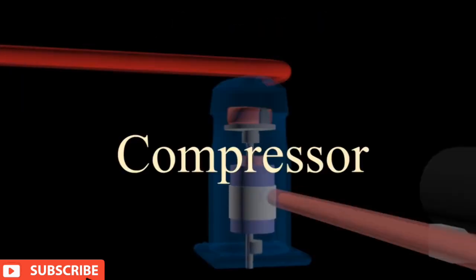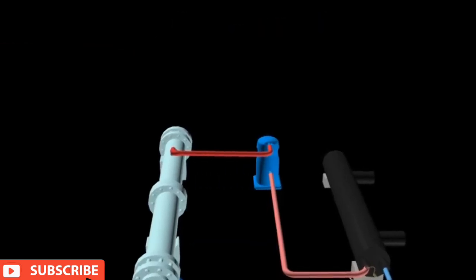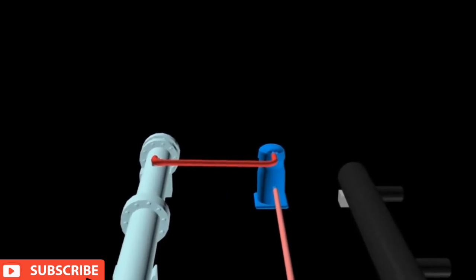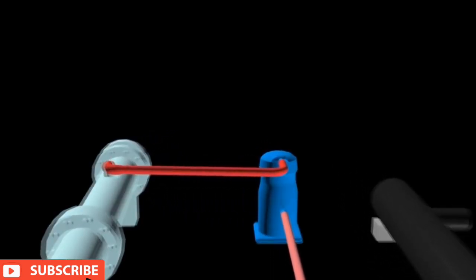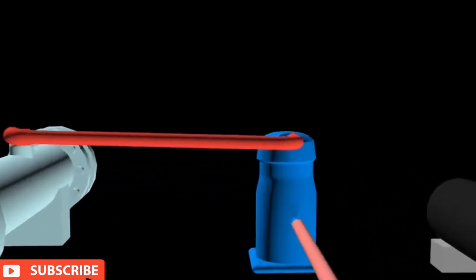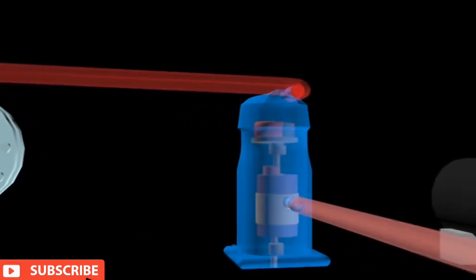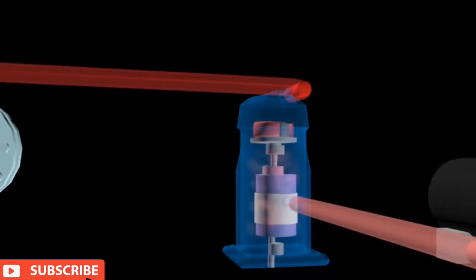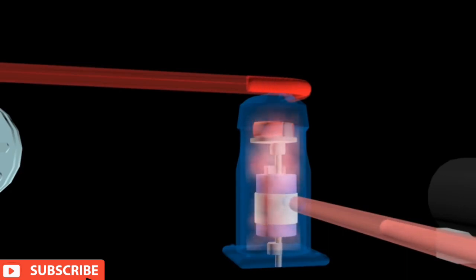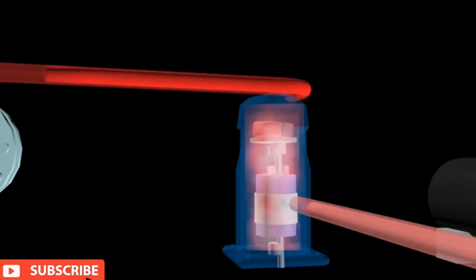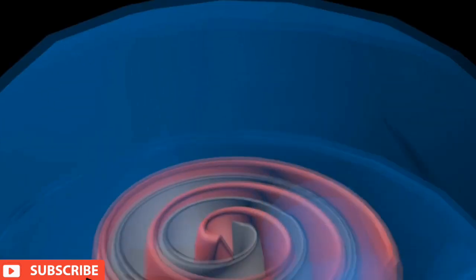Compressor. The compressor works to increase the pressure of the refrigerant. It also serves to increase the temperature of the refrigerant higher than the temperature of the condenser water, so that heat transfer can occur in the condenser. The refrigerant enters the compressor as low pressure gas and exits as high pressure gas. The type of compressor used is the scroll hermetic type.